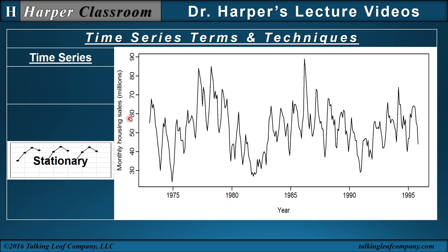The next time series is monthly housing sales of a single-family unit, from 1975 to 1990. Every year we see a pattern that seems to repeat every single year — a pattern that repeats every year is referred to as a seasonal component. We also see a longer cyclical pattern repeating more than just a year — from about 1975 to 1982-83, and from 1983 to around 1991. So this time series has both a cyclical component and a seasonal component.